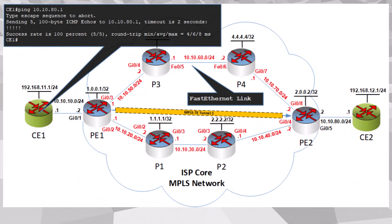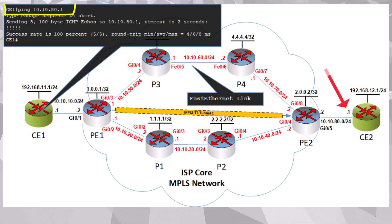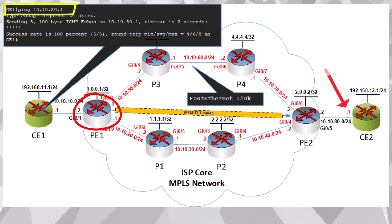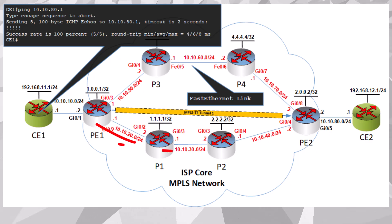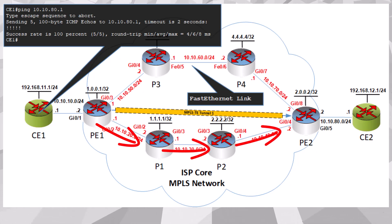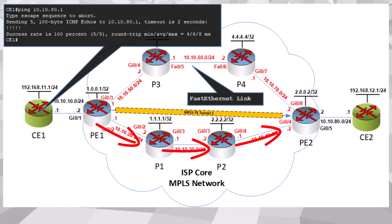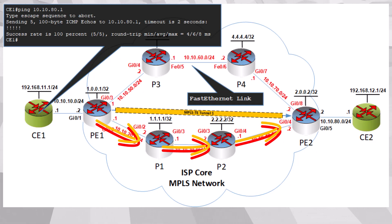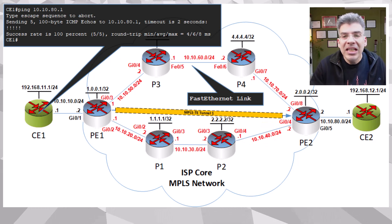Now let's say we ping this interface of CE2, which has an IP address of 10.10.80.1. PE1 is not configured to route this traffic via the tunnel, so it will route it using OSPF. It uses OSPF's IGP metric, which is via P1 and P2. So if everything is kept at default values, both the IGP and TE metrics will be the same, and the same physical path will be followed whether traffic is routed via the tunnel or not.